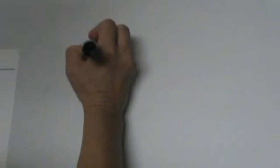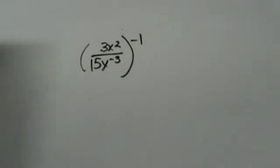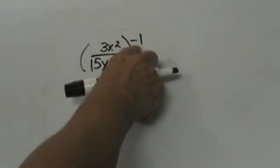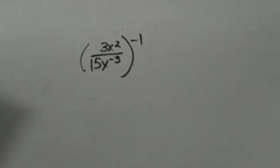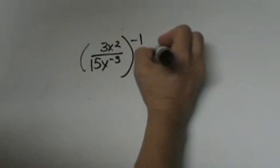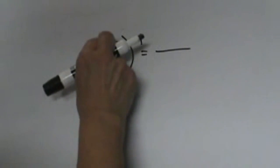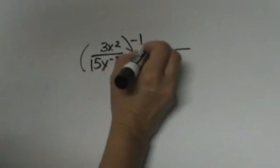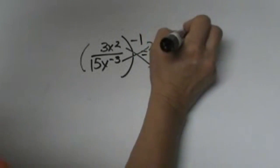Now let's look at simplifying with variables. Let's look at three x squared and fifteen x to the negative third, all raised to the negative first power. We're throwing in some variables. What does this negative exponent tell us? It tells us that we're on the wrong floor but we have a fraction, so what you're going to do is actually flip the whole fraction and change it to a positive exponent. Everything on the bottom goes to the top and everything on the top goes to the bottom, because the parenthesis is telling me everything is in the wrong location, so I'm going to flip it.